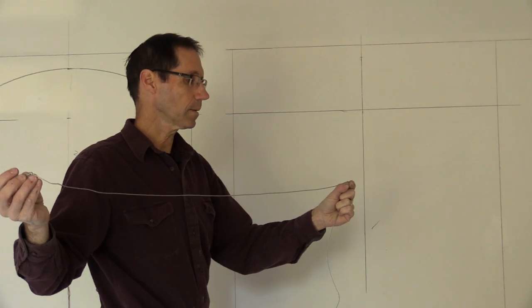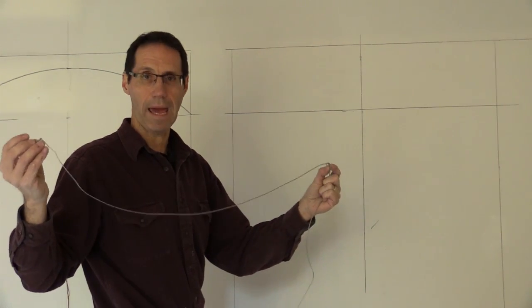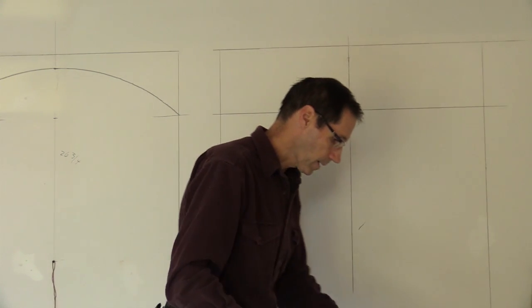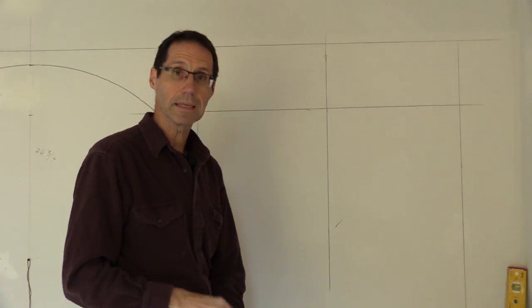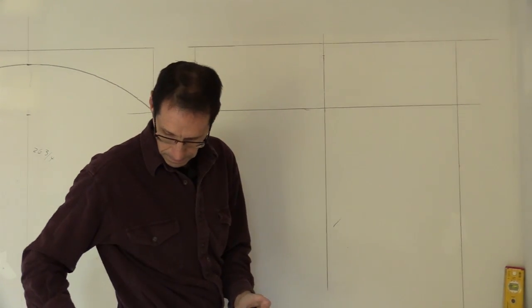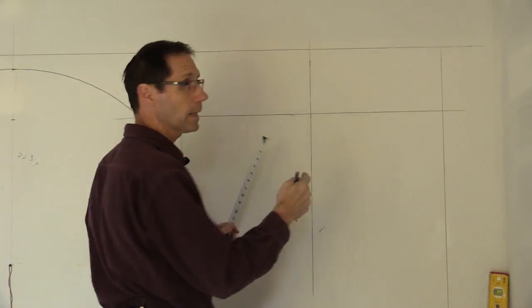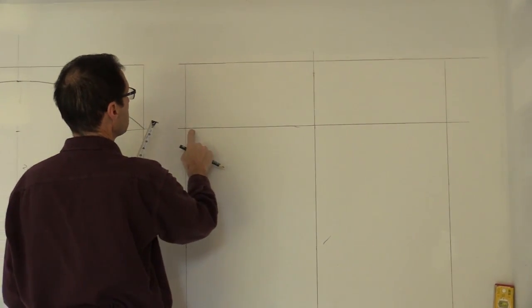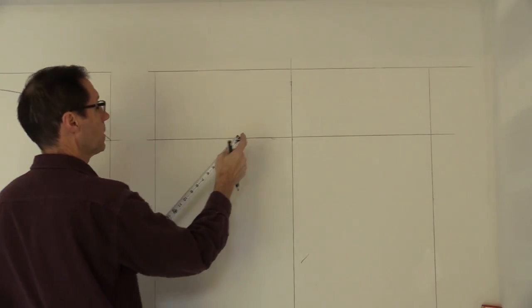When you're working on an elliptical arch, that is called the major axis. So that's 36 inches. Half of 36 is 18, and that's called the minor axis. Now, that's important because the minor axis is what's going to determine where we bring this line in, which you'll see what I mean in a minute.